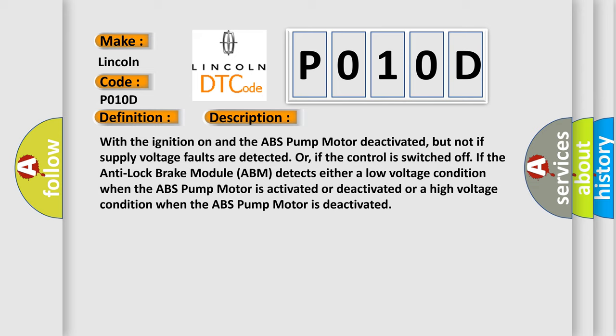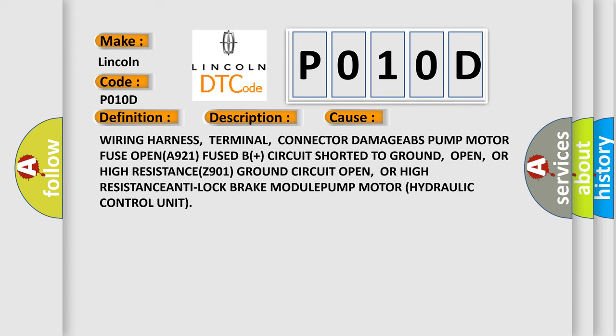This diagnostic error occurs most often in these cases: wearing harness, terminal, connector, damaged ABS pump motor fuse, open A921 fused B plus circuit shorted to ground, open or high resistance Z901 ground circuit open or high resistance, Anti-Lock Brake Module pump motor hydraulic control unit. The Airbag Reset website aims to provide information in 52 languages.